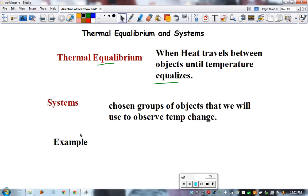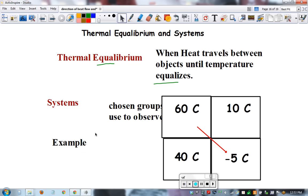Okay, systems are a chosen group of objects that we will choose to observe the temperature change of. We can define our own systems. So this is a system that I gave you. This system is closed. We are only observing what's happening between these four objects.